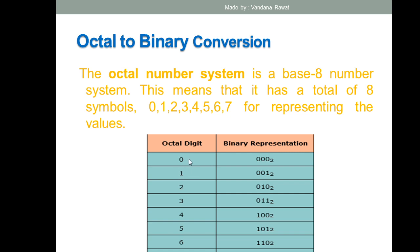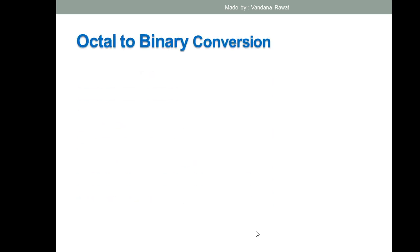The first octal digit is zero. When converting any octal number to binary, you must use exactly three binary digits — this is mandatory. So zero is represented as 000, one as 001, two as 010, three as 011, four as 100, and the rest of the conversions follow the same pattern. I also covered this in previous lectures.